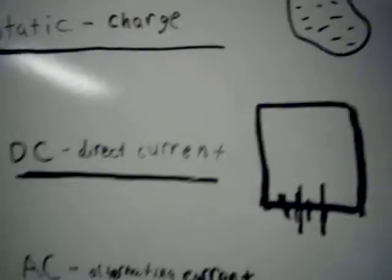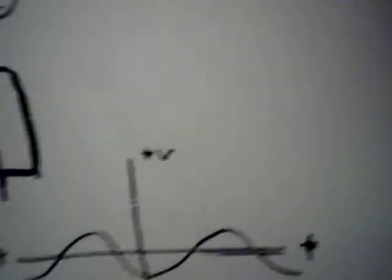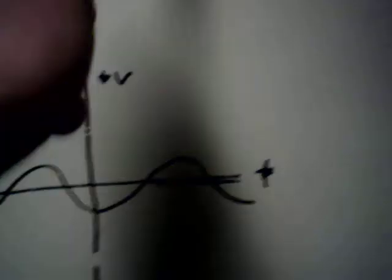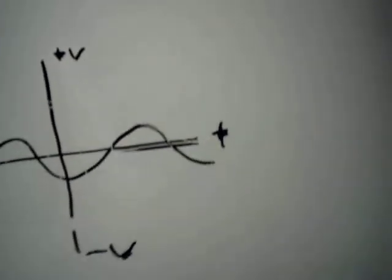And direct current comes from battery. Static charge would not show up on here unless there was a discharge and there would just be a spike up or down.